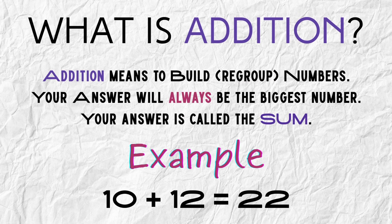So what is addition? Well, addition is where you're building a number. You're taking two smaller numbers and building a larger number. So your answer will always be the biggest, and your answer in math is called the sum. Look at the example: ten and twelve are less than twenty-two, but when you put them together, they equal twenty-two. So your answer, your sum, is twenty-two.